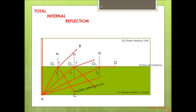If the angle of incidence is increased still further, e.g. the ray AO4, refraction is not possible and the incident ray is totally reflected. This is called total internal reflection.